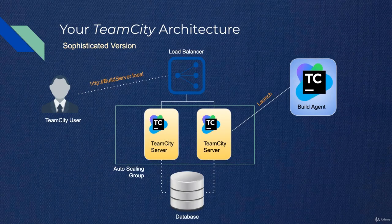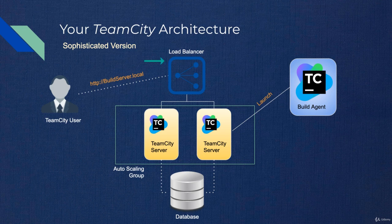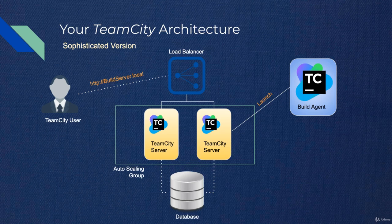For bigger teams, you might want a cluster of TeamCity servers. In that case, you will have multiple servers, each with one instance of TeamCity, and you put them behind a load balancer. A load balancer provides a single point of access to end users but distributes the traffic across the servers behind it — for example, users go to http://build-server.local, and the load balancer routes traffic to the appropriate server. Those servers will share a database.